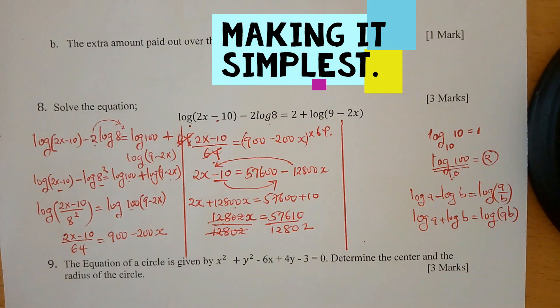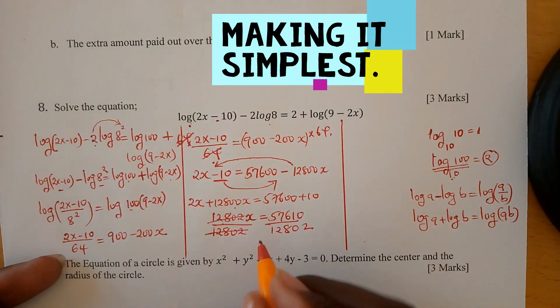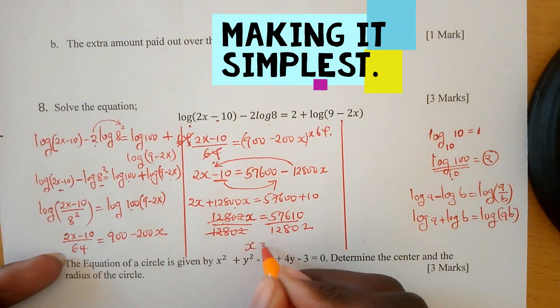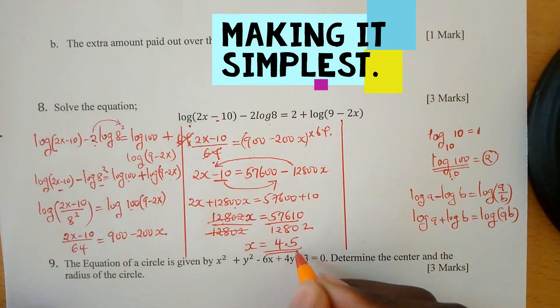57,610 divided by 12,802, and I'm getting the value of x to be 4.5.